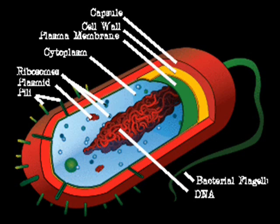If you have a look at this diagram you can see that there are several different parts to this type of organism. There is a cytoplasm which surrounds the DNA from this cell.